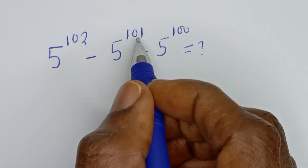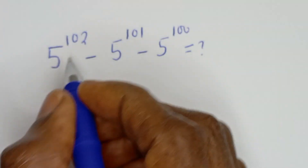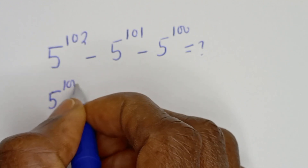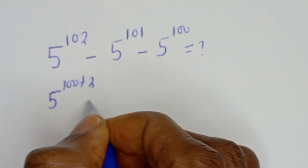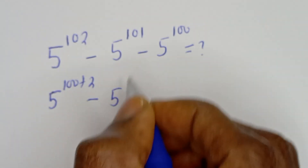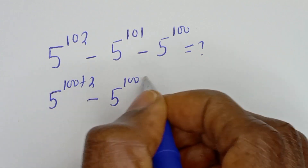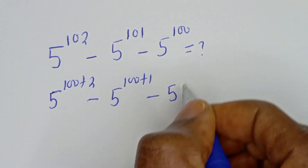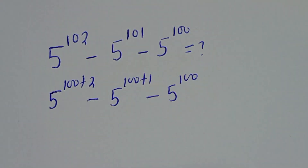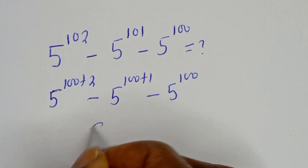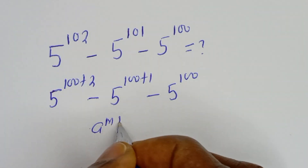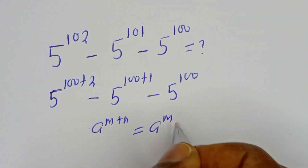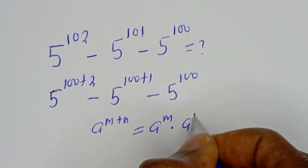Here, this is 102, 101, and 100. This can be written as 5 to the power of 100 plus 2, minus 5 to the power of 100 plus 1, minus 5 to the power of 100. We know the exponential rule that A to the power of M plus N equals A to the power of M multiplied by A to the power of N.